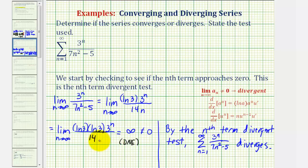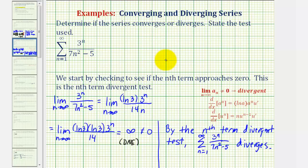So just remember, after applying a test to determine whether an infinite series converges or diverges, it's important that we state the outcome, as well as state the test used, to determine our conclusion. As I mentioned earlier, this is just the first lesson of several lessons on whether an infinite series converges or diverges. I hope this was helpful.